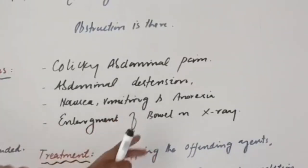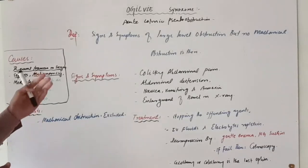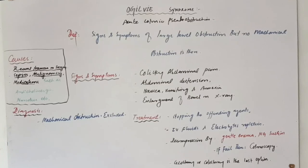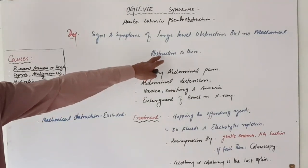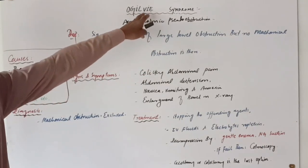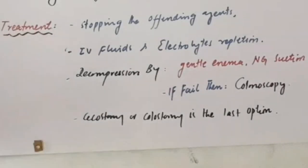On a plain abdominal X-ray you will find enlargement of the bowel. Ogilvie syndrome is a diagnosis of exclusion — you must first exclude all causes of mechanical obstruction, and only if mechanical obstruction is excluded is the diagnosis of Ogilvie syndrome made.